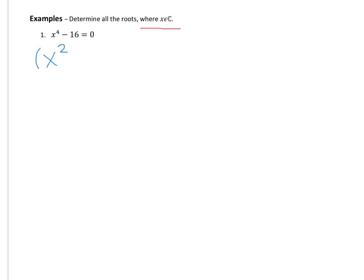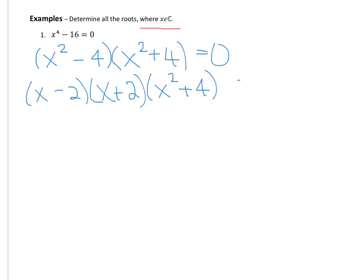So we're going to start by factoring. We're going to get x squared minus 4, of course, and x squared plus 4. Okay, we know we have another difference of squares, so we can take that further. We're going to get x minus 2, x plus 2, and then the x squared plus 4 we can't factor any further. We don't know any methods for that. So then we're ready to start solving.